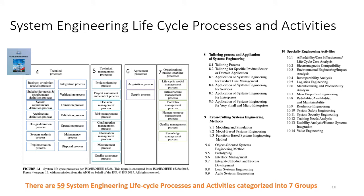The handbook is a massive document. There are a total of 59 system engineering life cycle processes and activities identified in the handbook, and those processes and activities are organized into seven groups. The remaining videos in this series will describe each one of them in more detail.